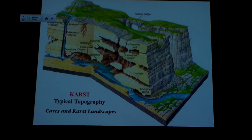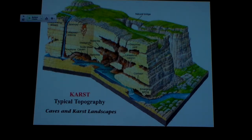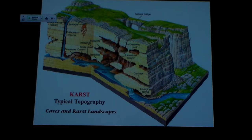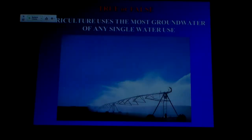We have what we call blind valleys, where the valleys erode back and then just end at a wall — like, well, what happened? So we have some very distinct types of surface features. But we also have cave systems and underground streams and stalagmites — all that kind of stuff down in the cave systems, some things that you may have already seen and explored a little bit on your own.